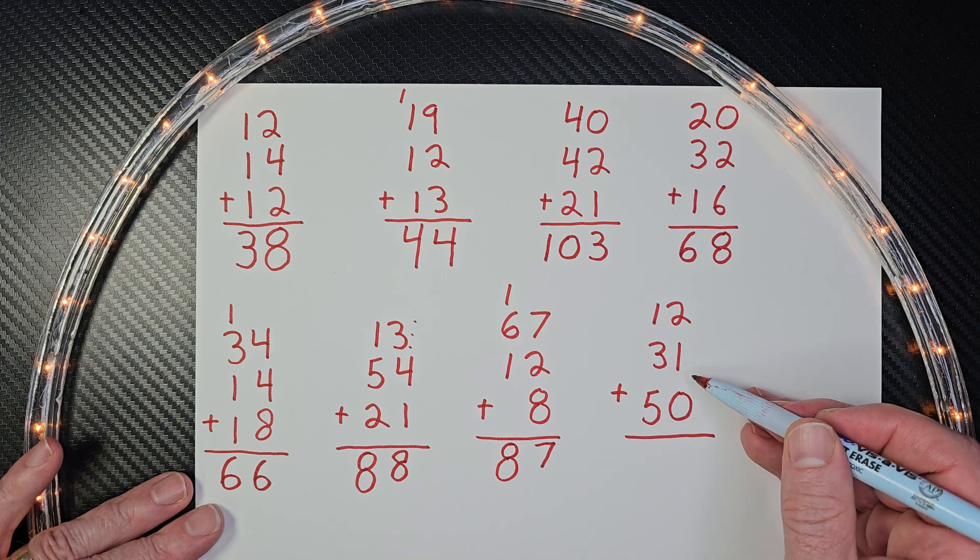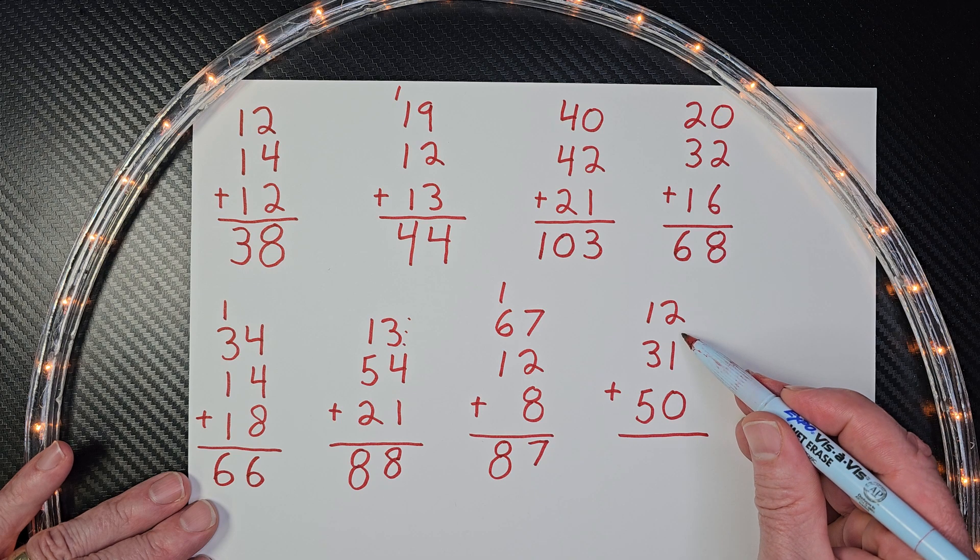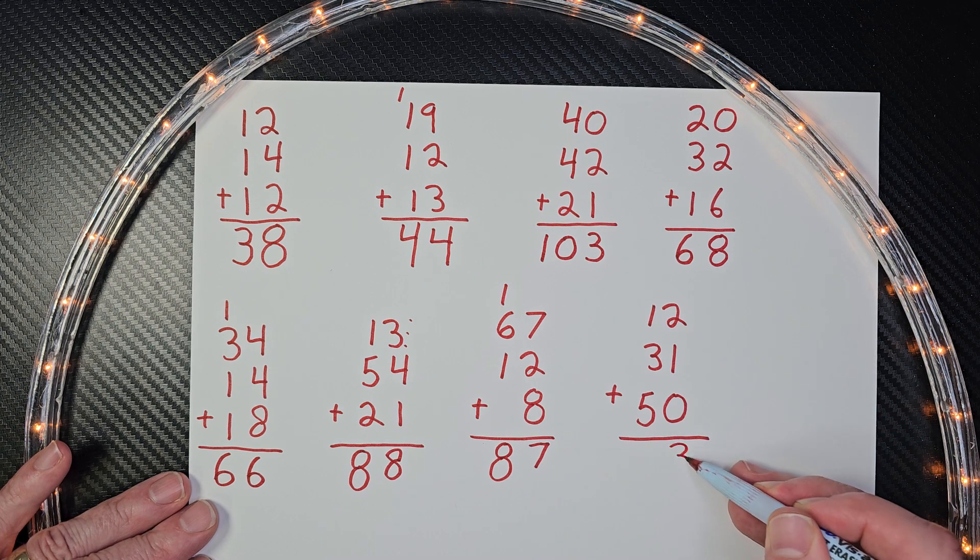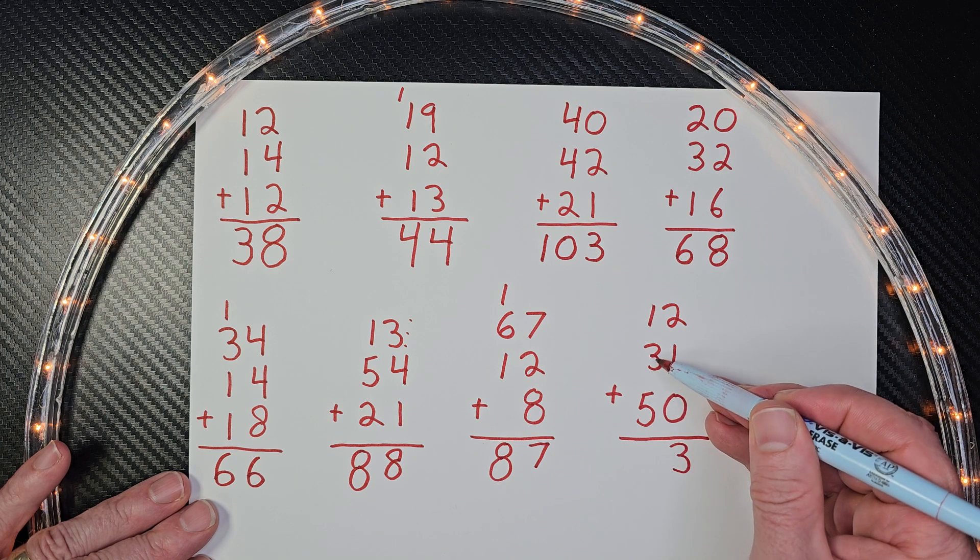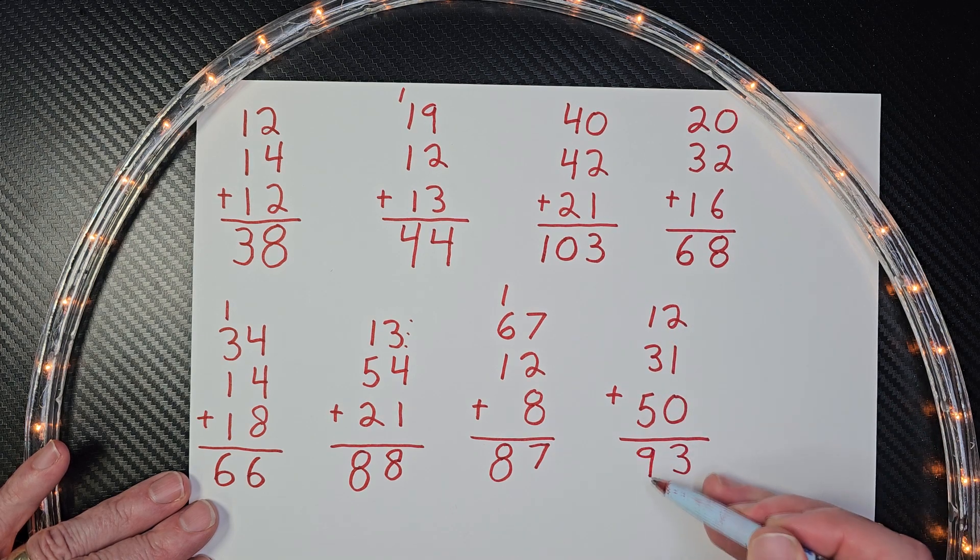Okay. On to our last problem right here. We have one plus two is three. And then I add my tens. Five, six, seven, eight, nine. Ninety-three.